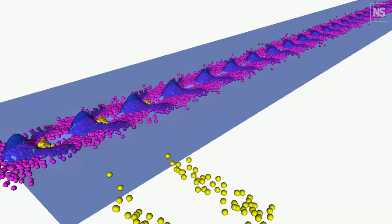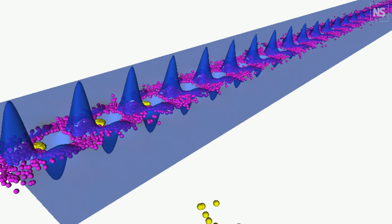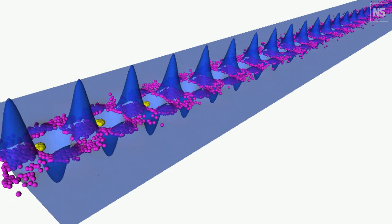We inject a proton beam into our 10 meter long plasma source, the lake, and this proton beam drives wakefields. It's our boat. Then we inject electrons and they jump on the right wave. We have to make sure that happens, and then they get accelerated to very high energies. That's where they get this very strong kick.